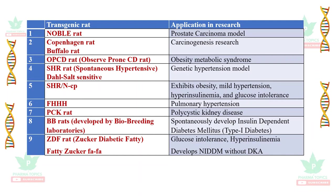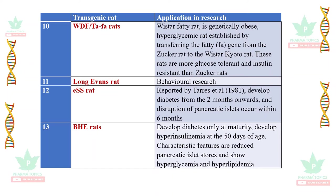The SHR-NCP model exhibits obesity, mild hypertension, hyperinsulinemia, and glucose intolerance. The FHH model is a useful model for study of pulmonary hypertension. The PCK rat is related to polycystic kidney disease. BB rats, developed by Bio Breeding Laboratories, continuously develop insulin-dependent diabetes mellitus (type 1 diabetes).